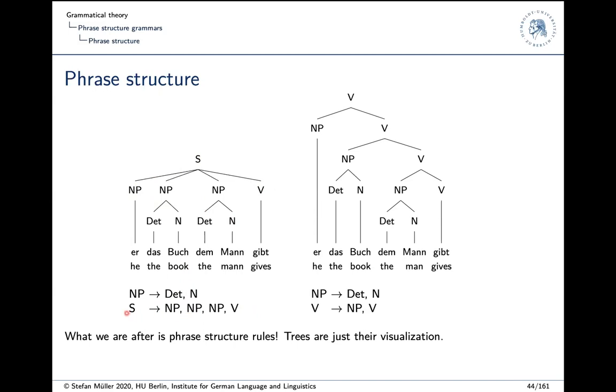So this is the S that results from combining these three things and this is the rule that corresponds to this tree. And the good thing about this rule is we can apply it to other ditransitive verbs as well, like spendet. So we can do that with the same rule. And then there's another rule saying okay, an NP can consist of a determiner and a noun.